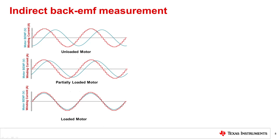When the load torque exceeds the pullout torque, the motor stalls and the back EMF goes to zero volts. By being able to detect the back EMF phase shift between rising and falling quadrants of the motor current, it is possible to detect a motor stall condition or end of line travel. This stall detection solution estimates the back EMF phase shift by constantly monitoring the effect of the back EMF on the current regulation waveform.